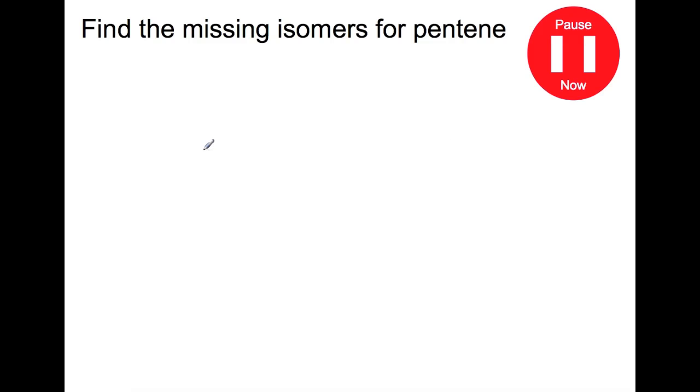Try and find the missing isomers for pentene. So pentene had the formula C5H10 and we drew all of the unsaturated isomers for pentene. However, there are cycloalkane versions. So the most simple is cyclopentane.